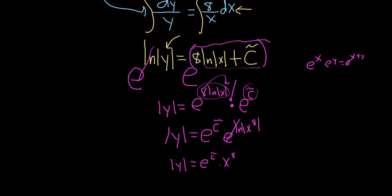Now, you can leave the absolute value, or you can drop it. x to the 8th is always positive, or 0, so it's not necessary. When you drop the absolute value here, though, you do get a plus or minus. So you get plus or minus e to the c tilde x to the 8th.